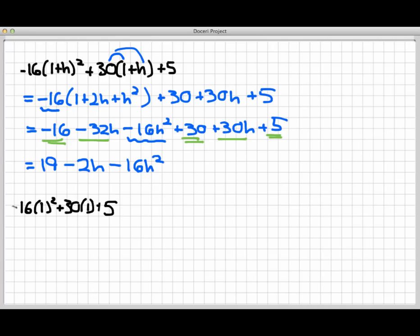But first, let's get the other half of the numerator. And that's just this number. That's a -16 times 1² plus 30 plus 5. And that, of course, is the same calculation I made up here. The -16 plus 30 plus 5. And that gives me +19.